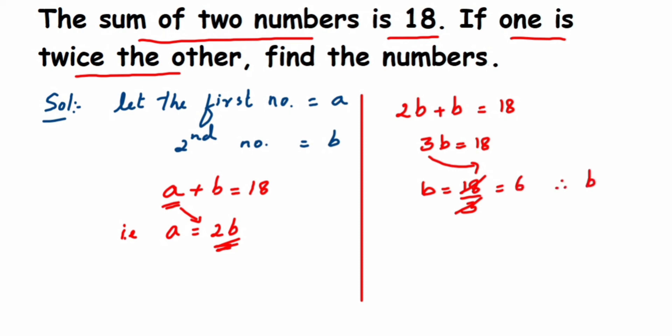So therefore b is equal to 6. Now if b is equal to 6, we can simply get the a value also because a is equal to 2b. So a is equal to 2 into, in place of b we'll put 6, which is equal to 12.